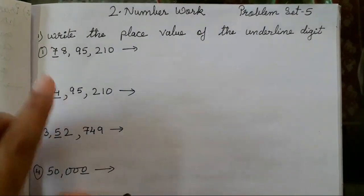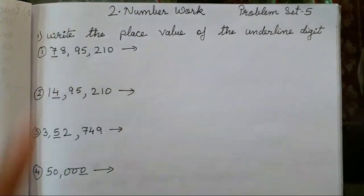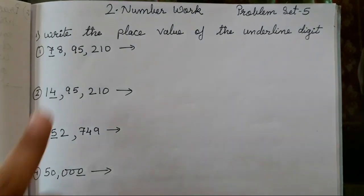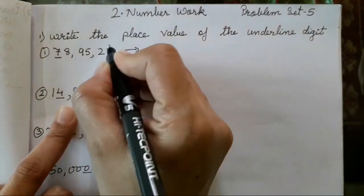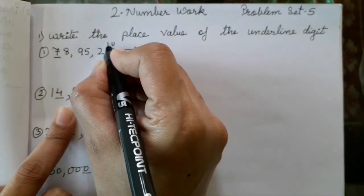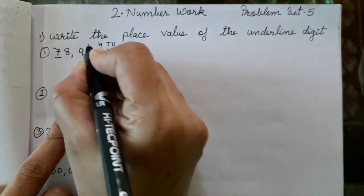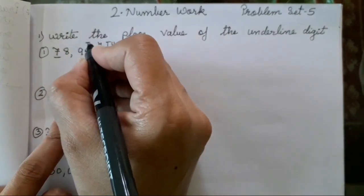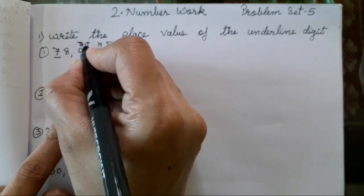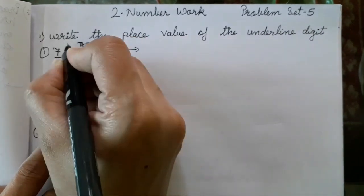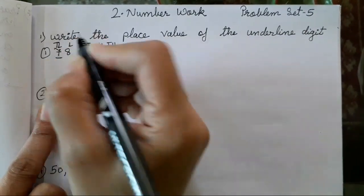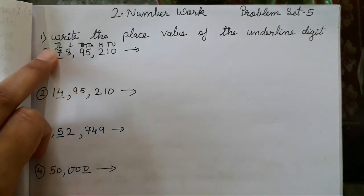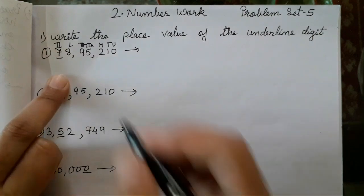You have to write only the underlined digit's place value, not the other numbers. How are you going to find the place value? It's very easy — I have already shown this in the previous video also. The place value chart goes: unit, tens, hundred, thousand, ten thousand, lakh, and ten lakh.